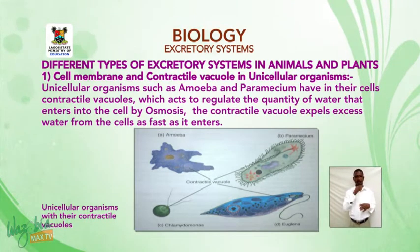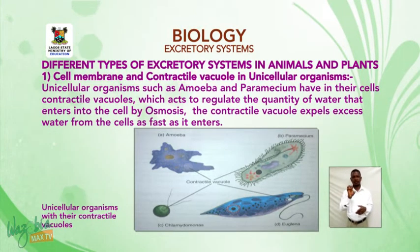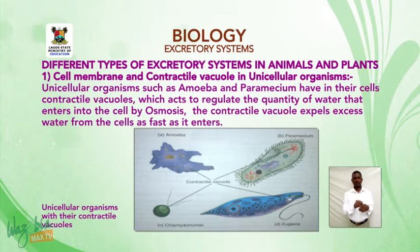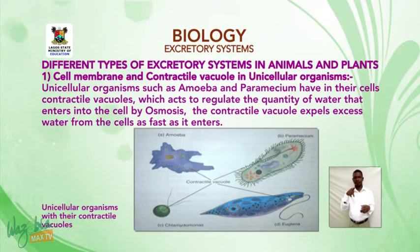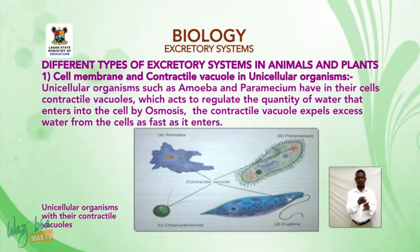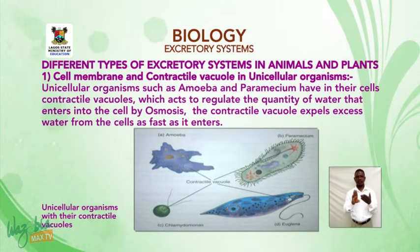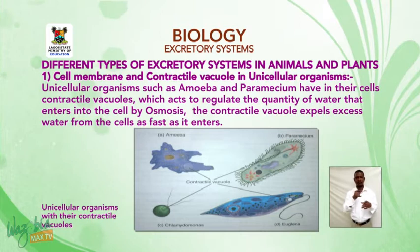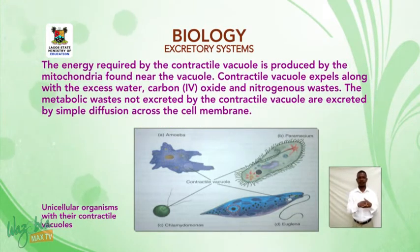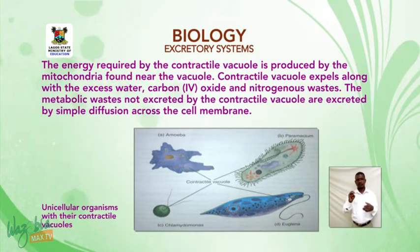In unicellular organisms such as amoeba and paramecium, waste removal involves the cell membrane and contractile vacuole. These organisms have contractile vacuoles which act to regulate the quantity of water entering the cells by osmosis. The contractile vacuole expels excess water from the cells as fast as it enters; the energy required is produced by the mitochondria found near the vacuole.